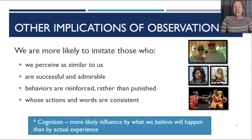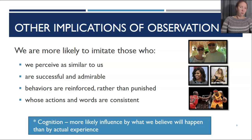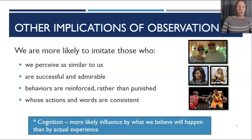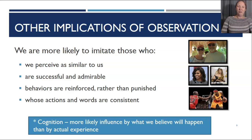A second cognition alert: we are more influenced by what we believe will happen than by actual experience. For example, if we see someone like LeBron following a certain diet or training regimen, we might do the same, believing it will bring us success — even if we know deep down that the likelihood of becoming the greatest basketball player is very slim. Watching an Olympian work hard might motivate you to work hard in your own field, which isn't necessarily bad. But sometimes our observations create grander expectations than what we actually experience in reality.